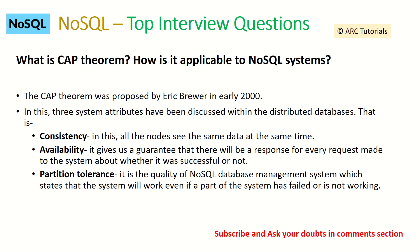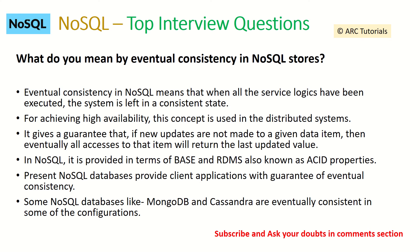The next question: what do you mean by eventual consistency in NoSQL stores? Eventual consistency means that when all service logic has been executed, the system is left in a consistent state. This concept is used in distributed systems for achieving high availability. It guarantees that if new updates are made to a given data item, eventually all accesses to that item will return the last updated value. NoSQL provides eventual consistency as opposed to ACID properties in RDBMS. Some NoSQL databases like MongoDB and Cassandra also have advanced configurations available.